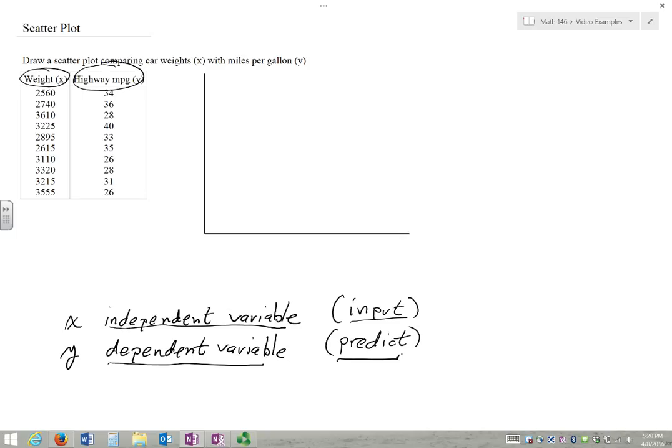So if we were to switch the X and Y in this example, it would be as though we were trying to predict the weight of a car based on the miles per gallon. You can weigh a car. You don't need to know how many miles per gallon it's going to weigh it or to know what the weight is. So I'm going to put that on our X axis.